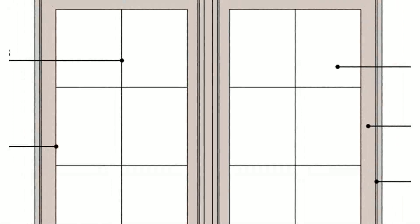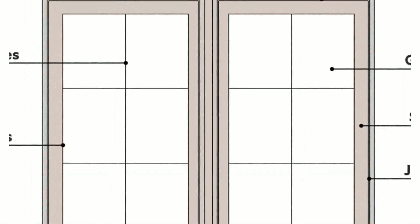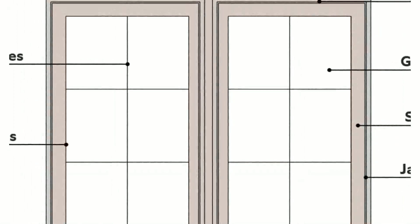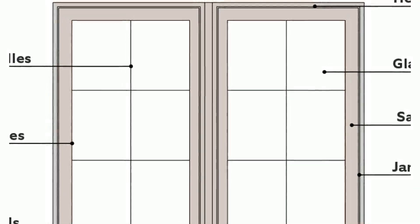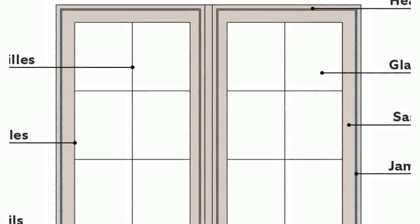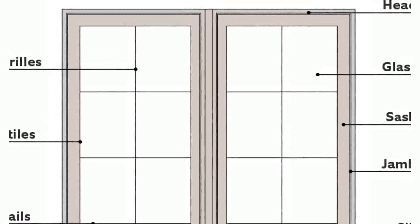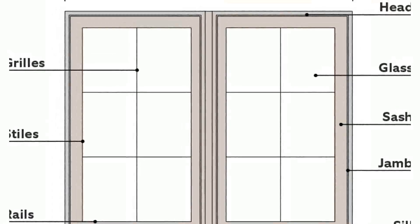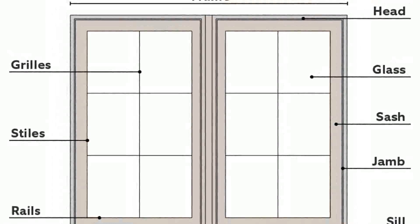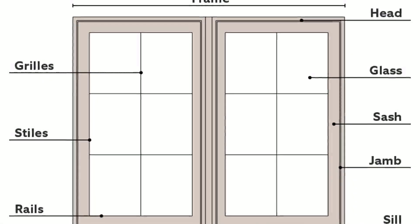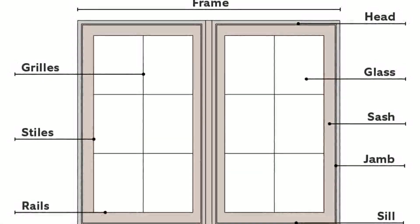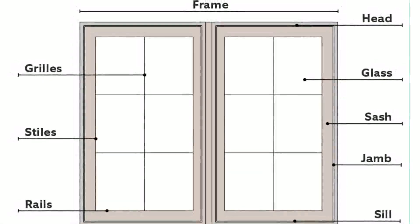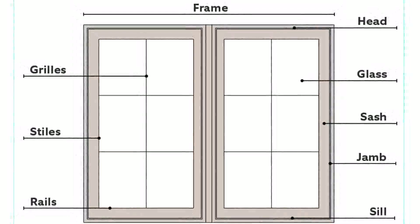As we saw in a previous video for doors — watch out the link in description below — a window is made of two parts: a window frame, and a window shutter or sash. Window frames are fixed to the opening in the wall by means of suitable hinges. The window frame has a sill at the bottom.